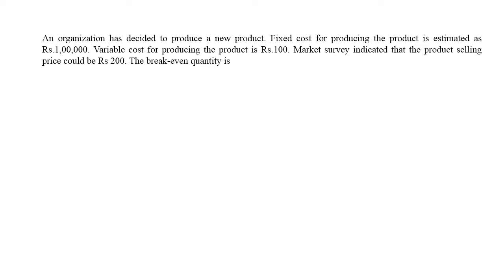The third question says: an organization has decided to produce a new product. The fixed cost for producing the product is estimated as rupees 1 lakh. The variable cost for producing the product is rupees 100. A marketing survey indicated that the product selling price would be rupees 200. The break-even quantity will be — with four options — and the correct answer is option A: 1,000. The break-even quantity is a quantity, similar to economic order quantity.